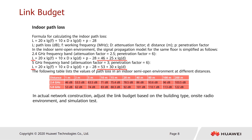Note that the link budget can only be used as a theoretical reference. In actual network construction, adjust the link budget based on the building type, on-site radio environment, and simulated test environment. The distance between APs is only calculated in theory; in actual situations, we need to adjust based on site conditions, and the overall distance is typically limited between 12 m and 30 m.